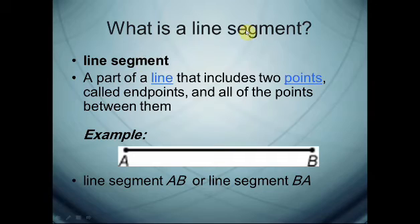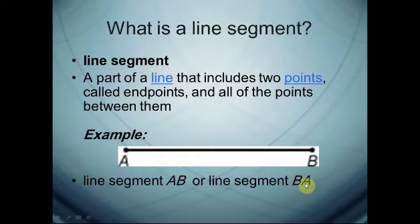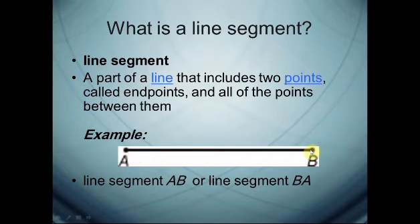What is the line segment? The line segment is a part of a line that includes two points called end points and all of the points between them. For example, line segment AB, or we can read it also line segment BA. The line segment has two end points, so we can measure its length.